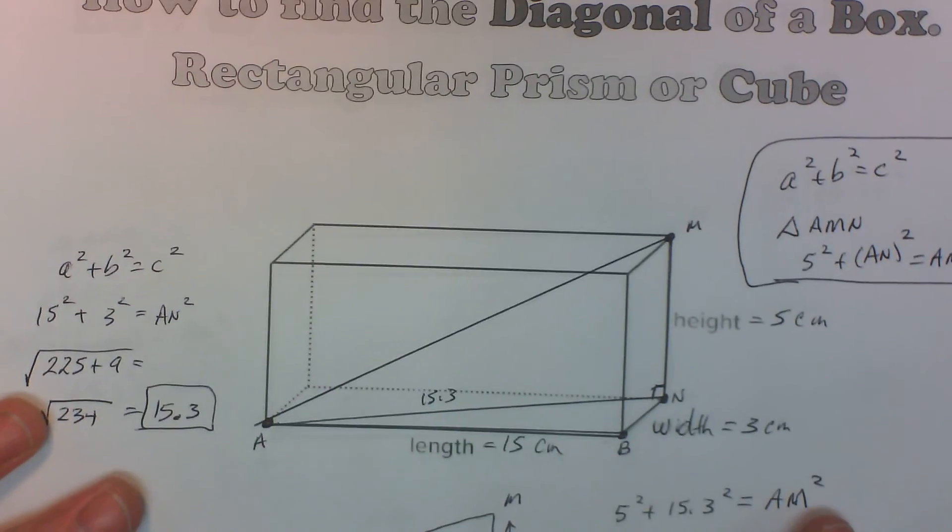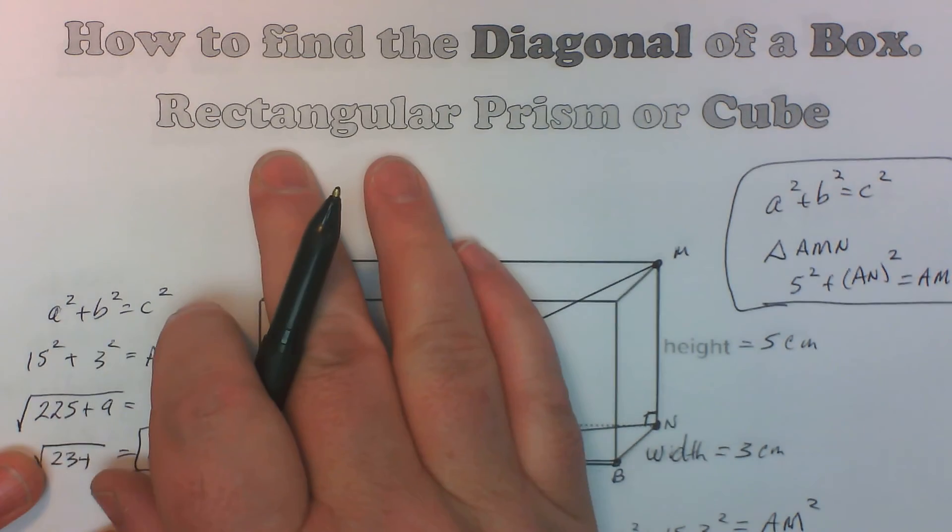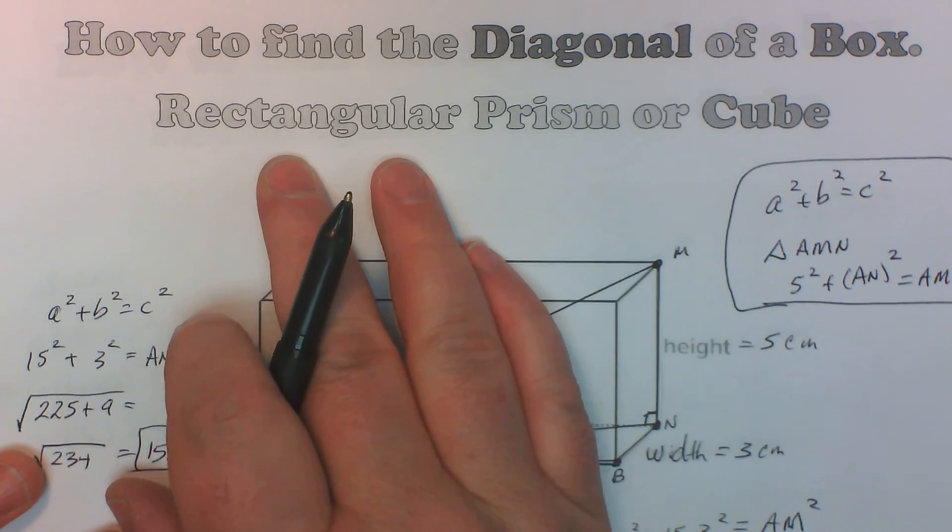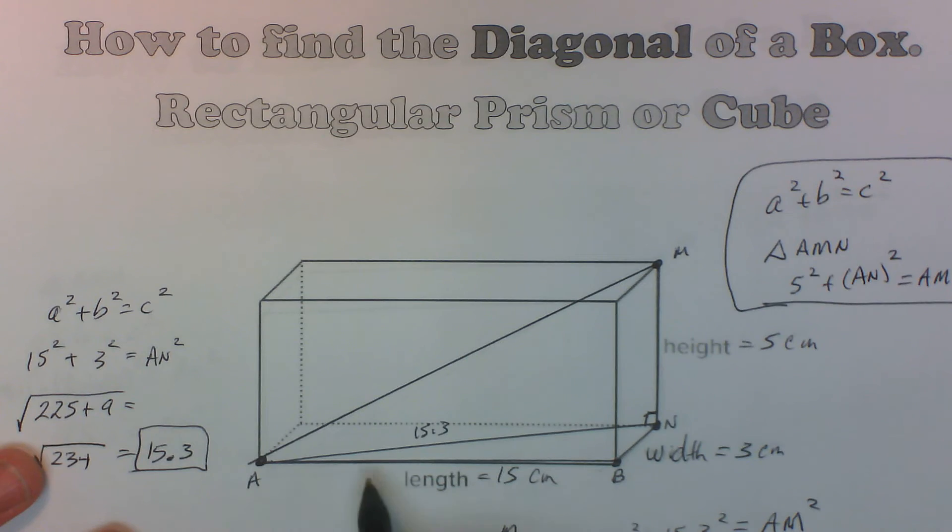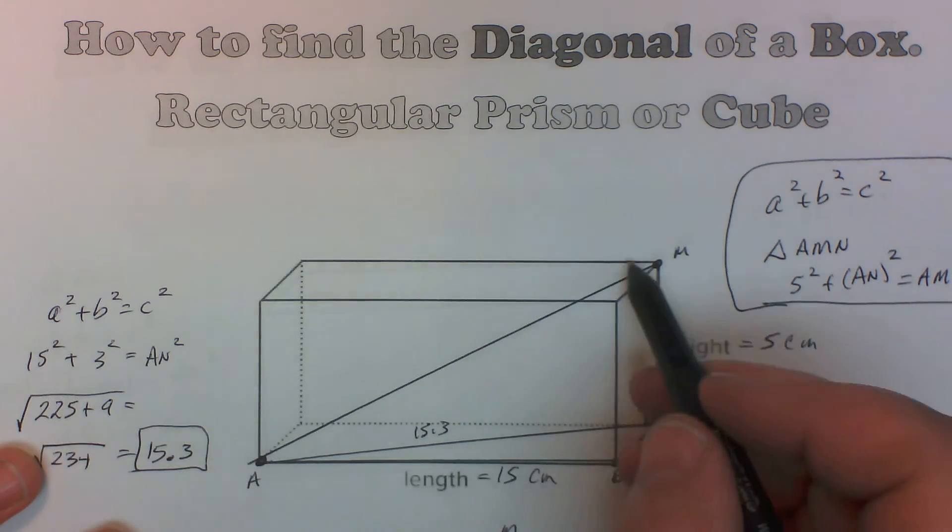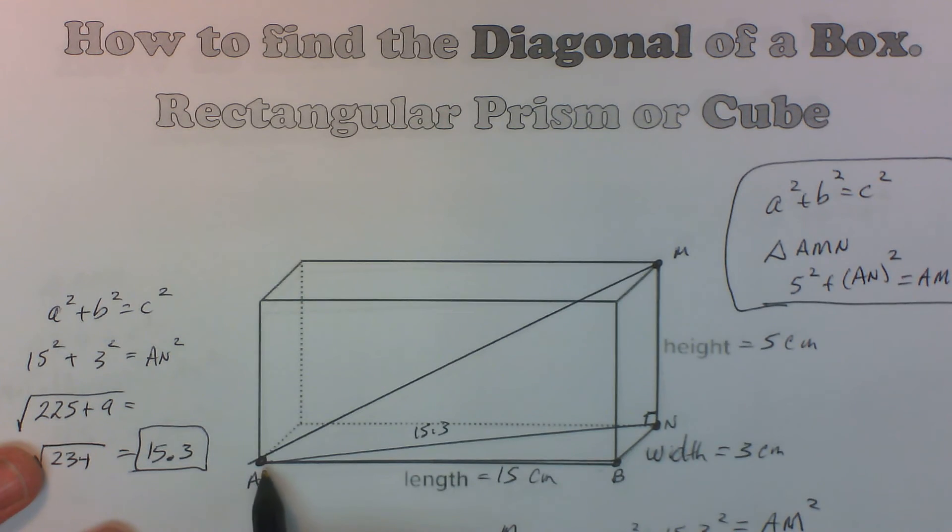So that's how you figure out that diagonal length in a rectangular prism, a cube or a box, however you want to call it. So first of all, go ahead and figure out what the sides are you need. You're probably going to have to figure out this cross distance right here, this hypotenuse of the triangle on the bottom.